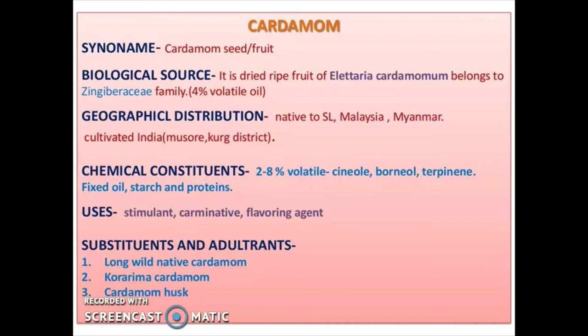Chemical constituents: 2 to 8% volatile oil, cineole, borneol, terpinene, fixed oils, starch, and proteins. It is used as a stimulant, carminative, and flavoring agent. Substitutes and adulterants of cardamom are large wild native cardamom, Korarima cardamom, and cardamom husk.